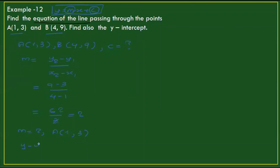Using the point-slope formula with x1 equals 1, y1 equals 3, and m equals 2.